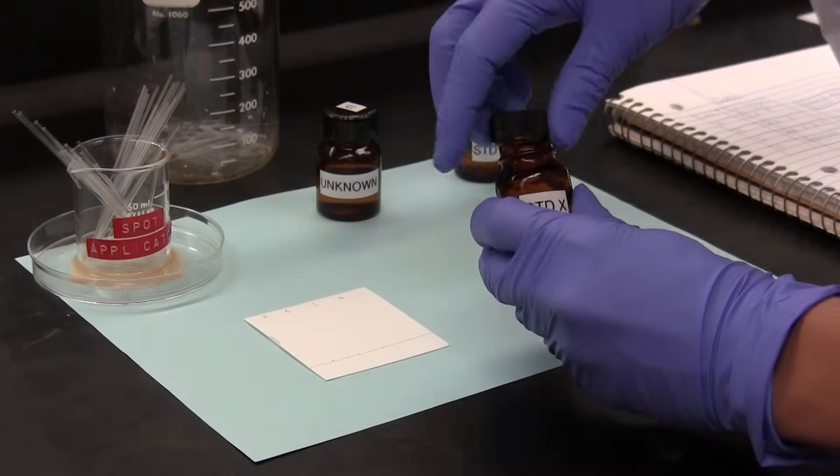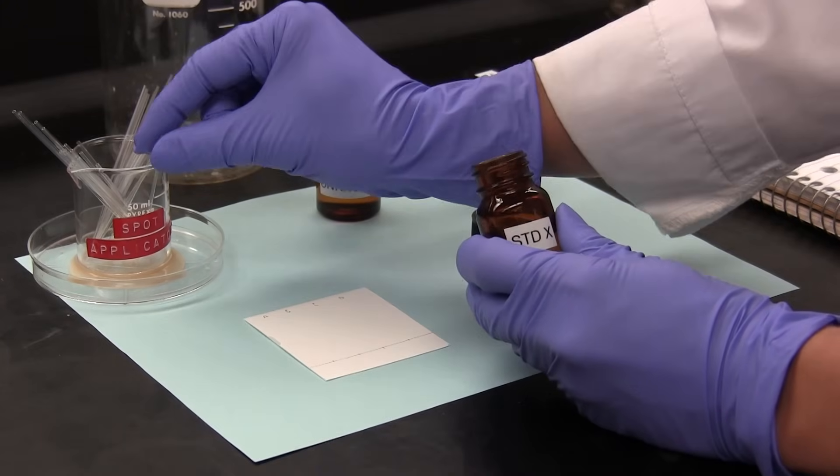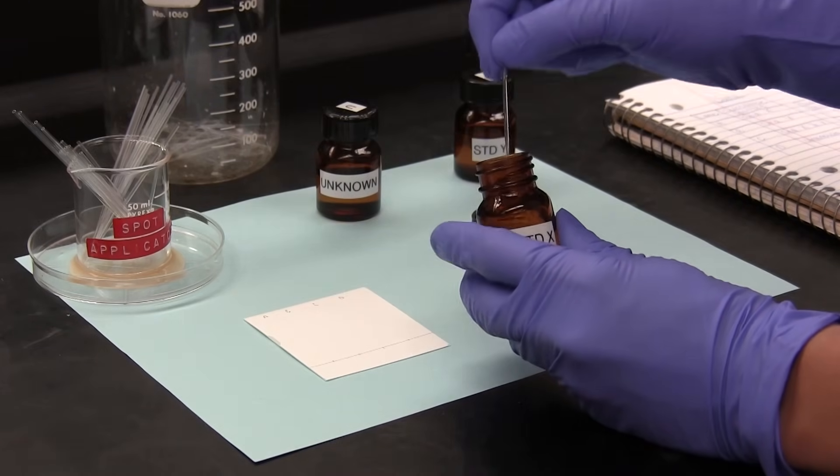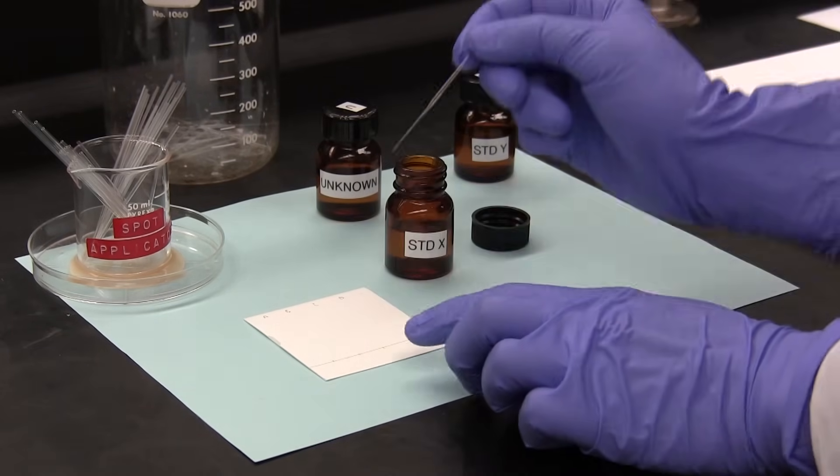The first part of the TLC analysis is to spot the plate. We use a capillary applicator to apply a spot of standard X at the origin in lane A, and again in lane C.